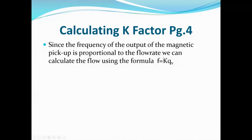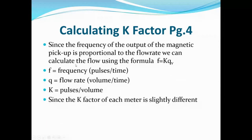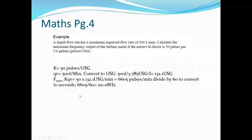The formula is: frequency F equals K-factor times flow rate Q, where K is pulses per unit volume. The K-factor is usually unique to each device — the device comes stamped with an as-built K-factor representing the number of pulses per unit of volume, from which we can calculate the flow rate.